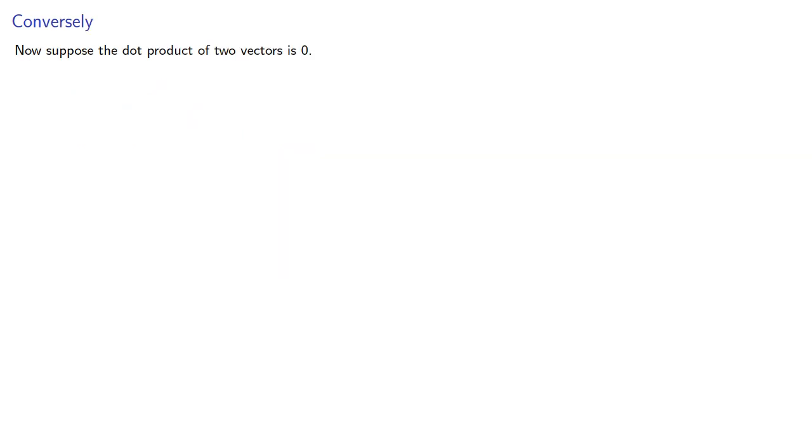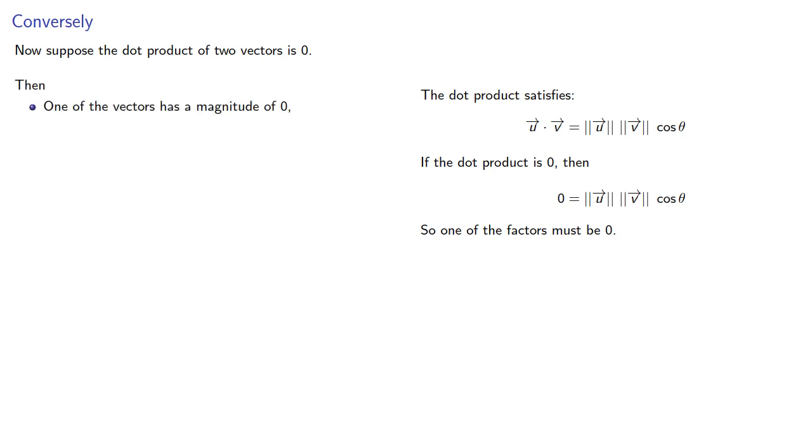Conversely, suppose the dot product of two vectors is 0, so our dot product satisfies the equation. If the dot product is 0, we have, and since this is a product equal to 0, one of the factors must be 0. So either one of the vectors has magnitude 0, or the cosine of theta is 0, which only occurs if the two vectors are perpendicular. Ah, I mean orthogonal.